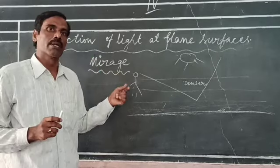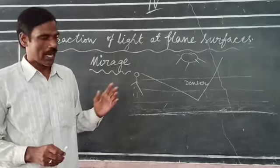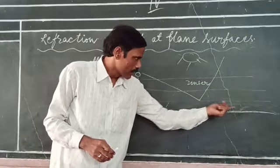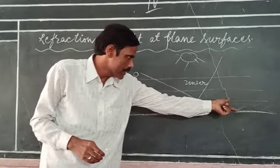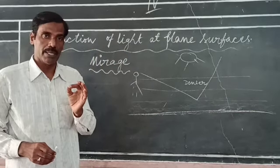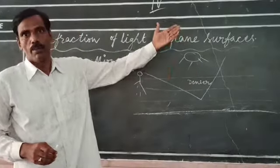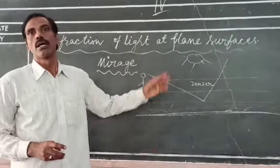This occurs because of total internal reflection, as the air column which is near the road acts as a rare medium when compared to the air layers which are above the surface of the road.